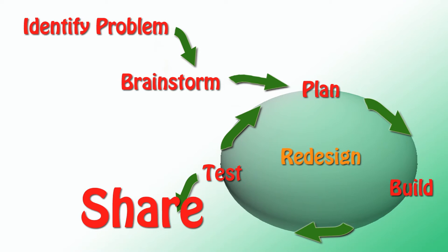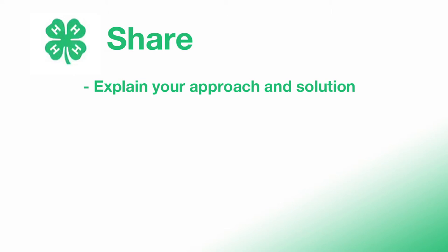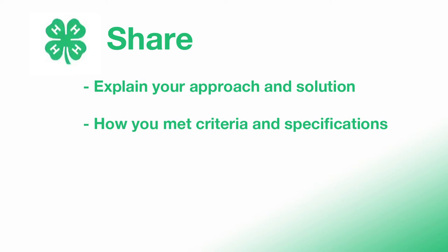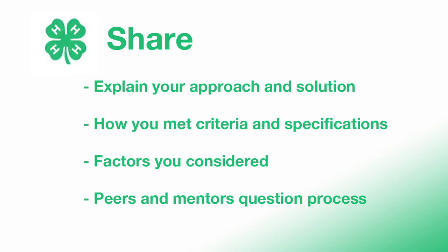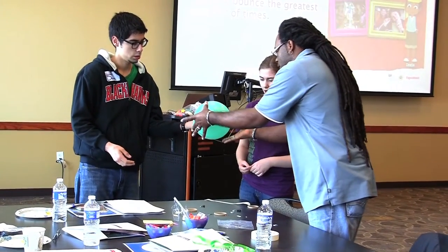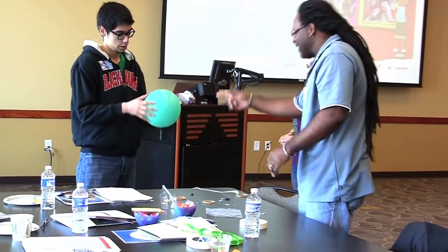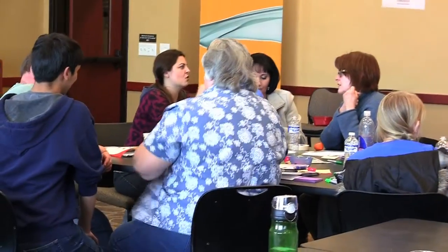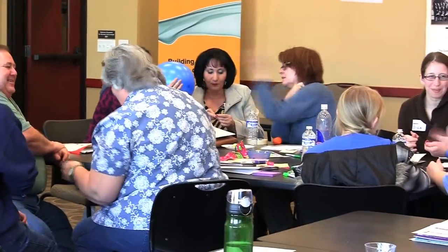Sharing the results of your design process with your peers and mentors is the next step. This is your chance to explain your approach and solution, what you did to meet the criteria and specifications, and what factors you considered. This is also the time for peers and mentors to question your process and the trade-offs you made. Learning is social and collaborative — when we share our ideas, our solution can be improved. Good engineering requires rigorous review and feedback; it is only through critical questioning that we arrive at the best solutions.